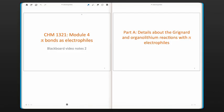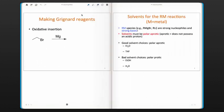Hi and welcome to our video about pi bond electrophiles. In part A, we're going to be talking about details about the Grignard and organolithium reactions as they react with pi electrophiles. In order to make a Grignard reagent, we can do a reaction known as an oxidative insertion.